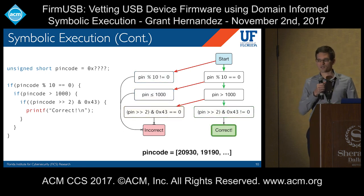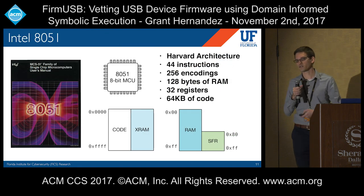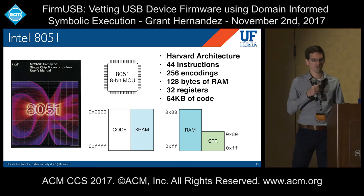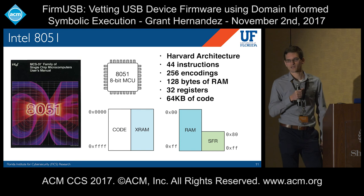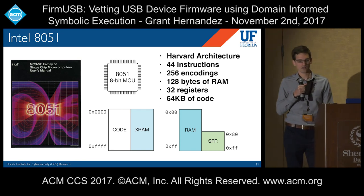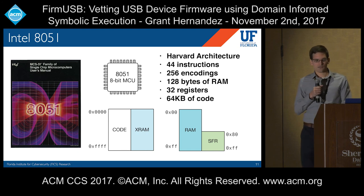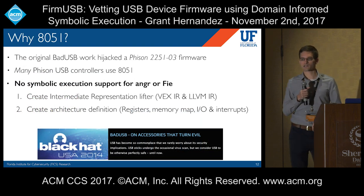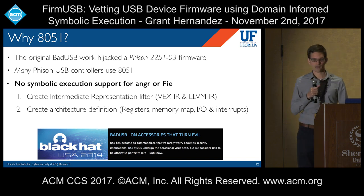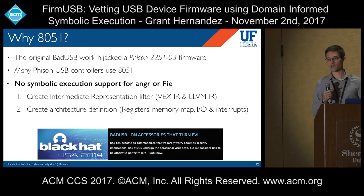Before we could use symbolic execution, we had to support the CPU architecture used in the USB firmware — Intel 8051. The 8051 is a Harvard architecture with 44 instructions across 256 encodings, about 128 bytes of RAM, 32 registers, and a maximum of 64 kilobytes of code space. It's quite small and embedded, developed in the 1980s — and still used today. The 8051 was the architecture of the original bad USB's hijacked firmware — specifically a Phison 2251-03 firmware image. Phison is essentially one of the largest manufacturers of USB controllers today, and they use 8051 as a core. Unfortunately, there was no support for symbolic execution on this architecture in either angr or Fī.